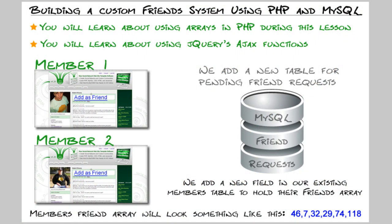Hello everybody. In this lesson we'll learn how to build a friend system into our custom community, social network, or any website we have. First we'll briefly discuss the logic of what needs to take place in the programming so you have a clear picture in your mind of all the steps. Then, after we have the logic laid out, we'll write the programming in PHP and MySQL with a touch of jQuery.